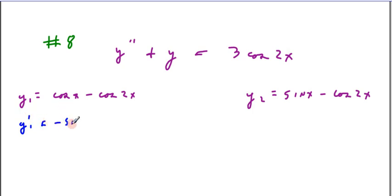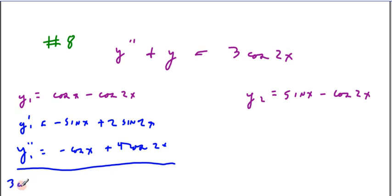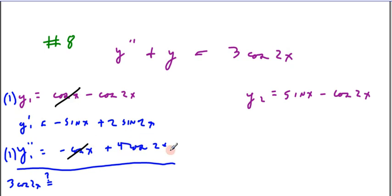Checking y1: y1 prime is minus sine x plus 2 sine 2x, and y1 double prime is minus cosine x plus 4 cosine 2x. Adding the double prime to the original y1: cosine x minus cosine x goes away, leaving 4 cosine 2x minus 1 cosine 2x, giving 3 cosine 2x. That matches the right-hand side, so solution y1 checks.